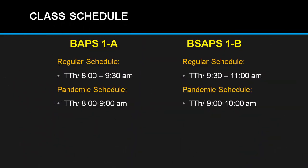For the Bachelor of Arts in Political Science Section A, your regular schedule is Tuesday and Thursday, one and a half hours, 8 to 9:30 AM. For the pandemic schedule, same days Tuesday and Thursday, one hour only, 8 to 9 AM. For Section B, your regular schedule is Tuesday and Thursday 9:30 to 11 AM, and for the pandemic schedule we will only be meeting one hour, same days, 9 to 10 AM.